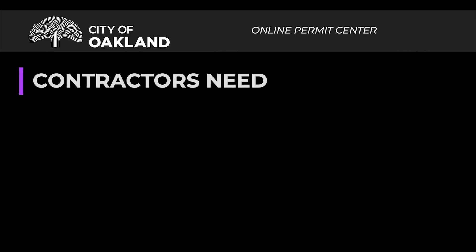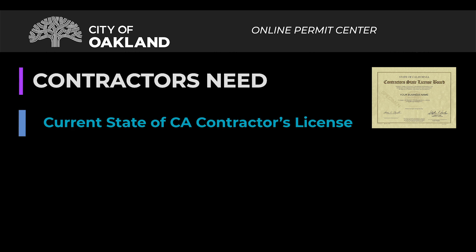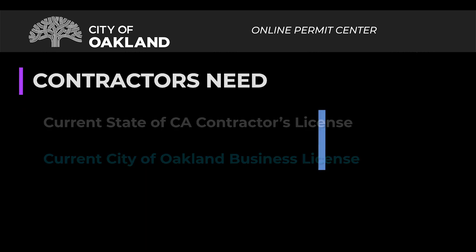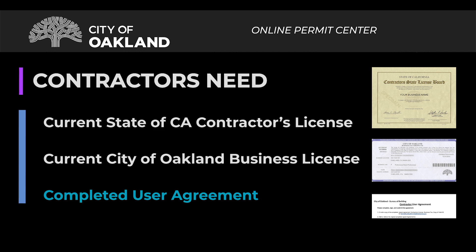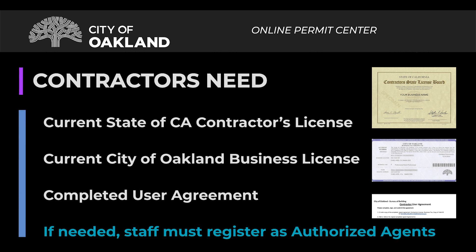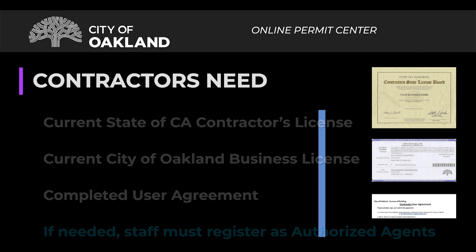If you are applying for a permit as the contractor, you will need a current State of California contractor's license and a current City of Oakland business license. You must also complete the user agreement. If you have staff members pulling permits on your behalf, be sure you add their names under Authorized Agents on the user agreement. Each staff person must register using your license information and their email address.